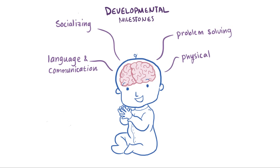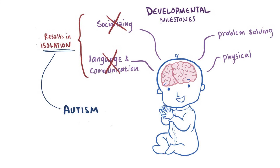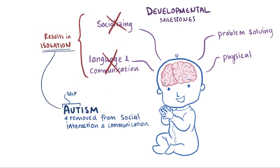Especially when certain skills related to socializing and communicating don't proceed as normally, it can result in isolation, which is where the name autism originated, since auto means self. So autism refers to a condition where somebody might be removed from social interaction and communication, leaving them alone or isolated.